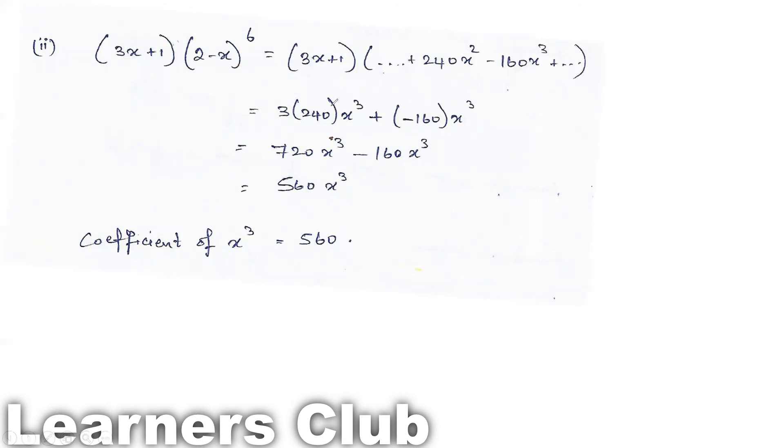Now simply multiply. There is x here, multiply with the coefficient of x squared, that is 3 into 240. Then this is a constant value, multiply this with the cubic term which is minus 160. When you multiply 3 into 240 you get 720, minus 160 into 1 gives you minus 160. When you add them both you will get 560 x cubed. This is the coefficient that they are asking. So the coefficient of x cubed for this value is 560.